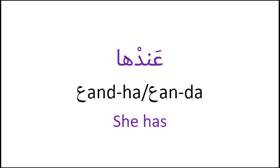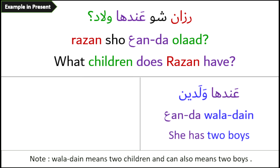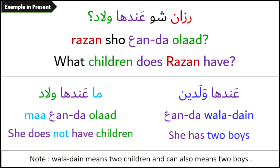عندها – she has. Example: شو عندها ولاد؟ – What children does Rezan have? The reply is: عندها ولدين – She has two boys. Or to negate: ما عندها ولاد – She does not have children.